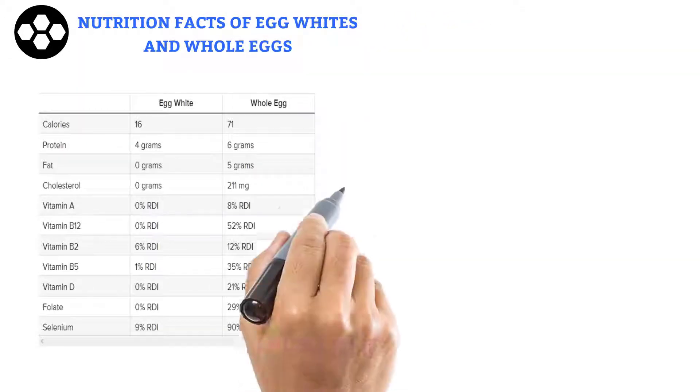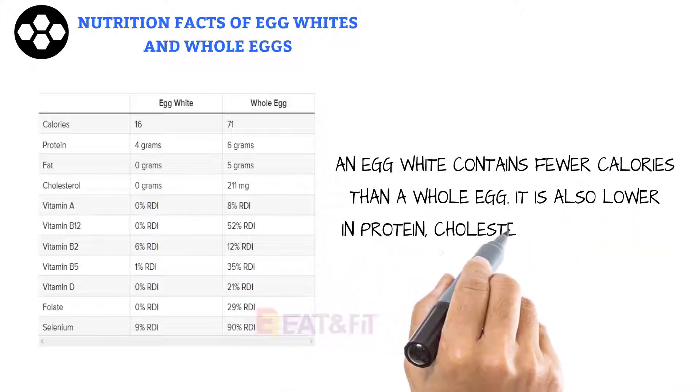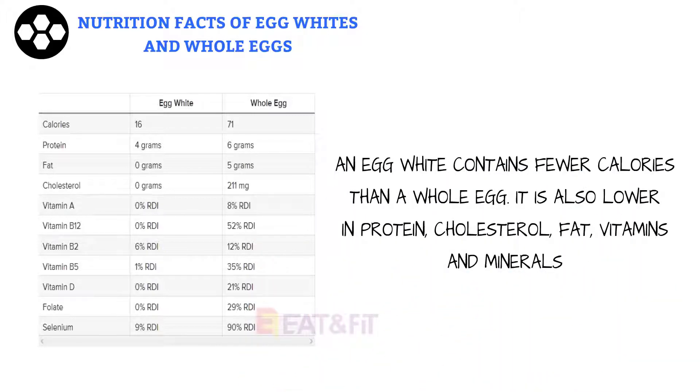Nutrition facts of egg whites and whole eggs: An egg white contains fewer calories than a whole egg. It is also lower in protein, cholesterol, fat, vitamins, and minerals.